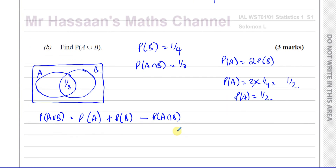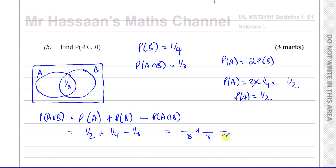We have all the information we need: probability of A is 1/2, probability of B is 1/4, and probability of A intersection B is 1/8. Expressing everything over 8: that's 4/8 plus 2/8 minus 1/8. That's 6/8 minus 1/8, which is 5/8. So the probability of A union B is equal to 5/8.